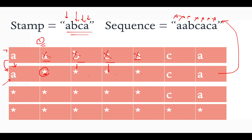So we do a stamping operation starting at zeroth index. We add zeroth index to our answer and update the string with asterisks. Now the string becomes '******ca'. We check whether the complete string equals the target — it's still not equal. We continue the process, starting from the zeroth index. Indices 0, 1, 2, 3, 4 don't need stamping, so we move ahead.